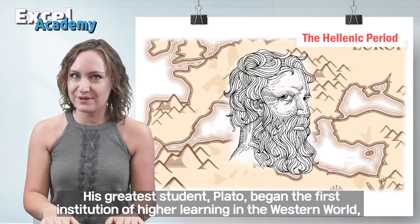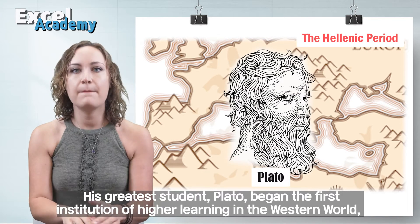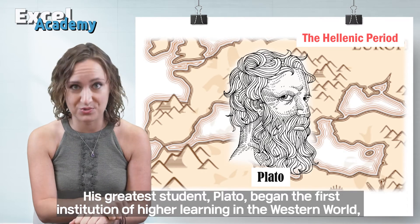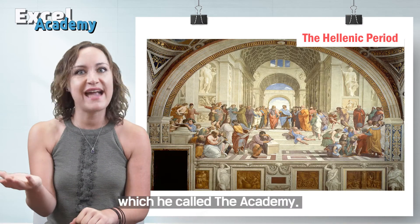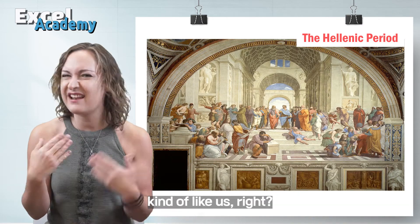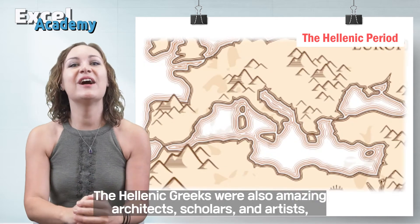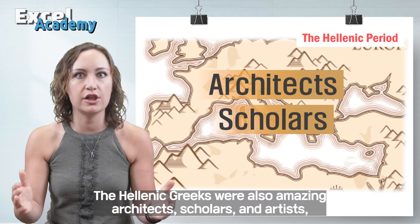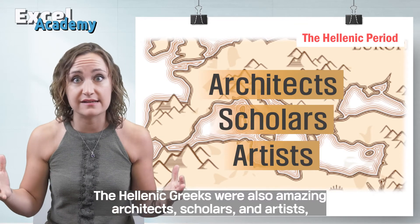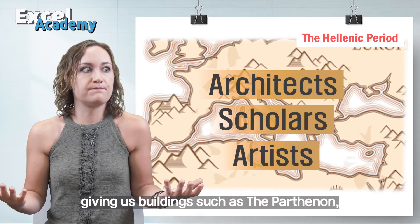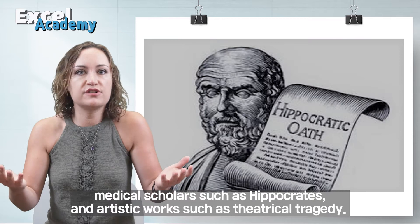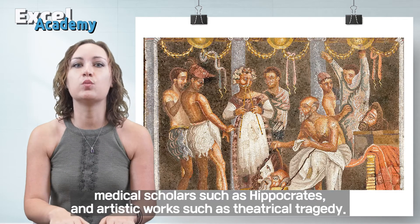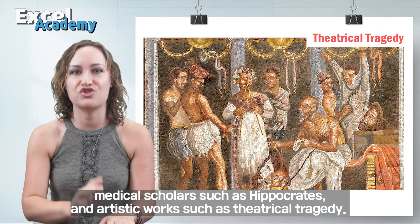His greatest student, Plato, began the first institution of higher learning in the Western world, which he called the Academy — kind of like us, right? The Hellenic Greeks were also amazing architects, scholars, and artists, giving us buildings such as the Parthenon, medical scholars such as Hippocrates, and artistic works such as the theatrical tragedy.